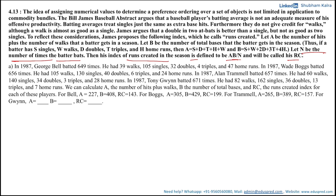Tony Gwynn batted 671 times; he had 82 walks, 162 singles, 36 doubles, 13 triples, and 7 home runs. We can calculate A, the number of hits plus walks, B, the number of total bases, and RC, the Runs Created index, for each player.